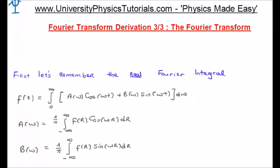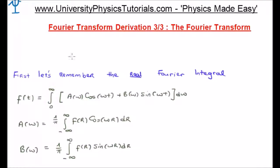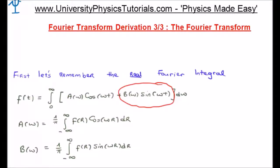So let's remind ourselves what the real Fourier integral looks like. We start with a function of time, small f of t, and that can be expressed as an integral going from zero to infinity. We integrate a of omega times cosine(ωt), and we add to that b of omega times sine(ωt), and we integrate this with respect to omega.